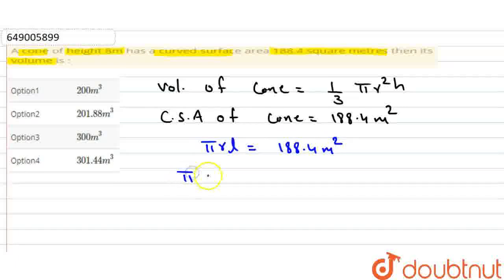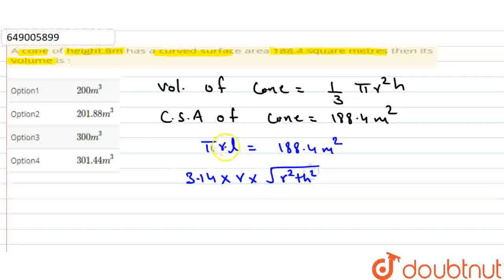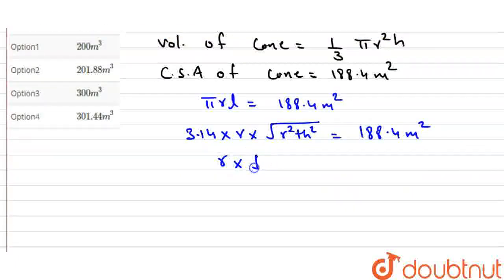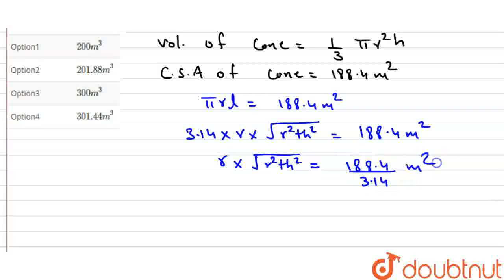The curved surface area of the cone equals pi times r times l, where l is the slant height, equal to the square root of r squared plus h squared. Setting up the equation: r times the square root of r squared plus h squared equals 188.4 divided by 3.14, which gives us 60.